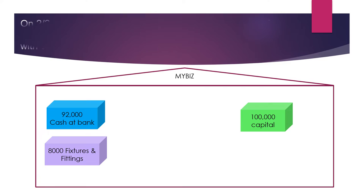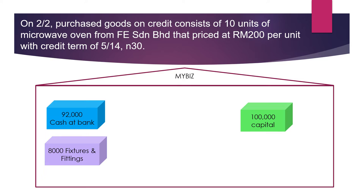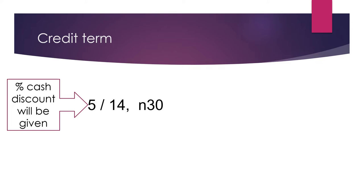Now let's look at another transaction: on the same day the business purchased goods on credit — 10 units of microwave oven from a supplier, priced at 200 ringgit each, with a credit term of 5/14, net 30.